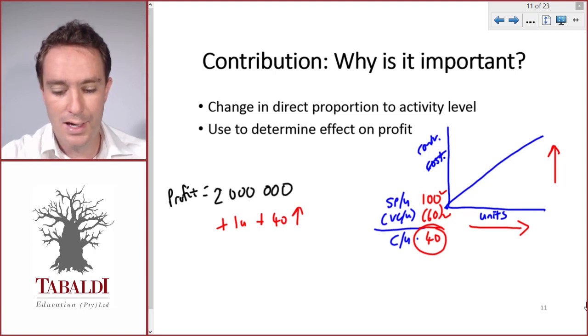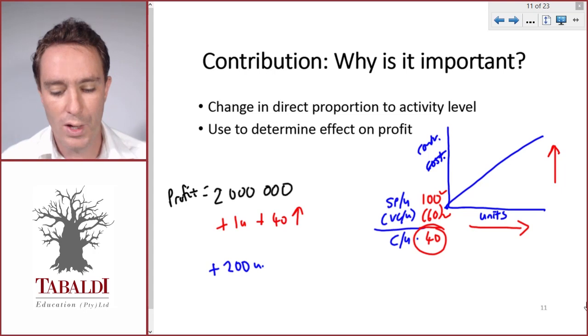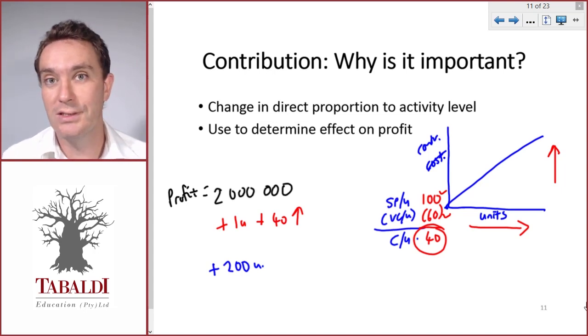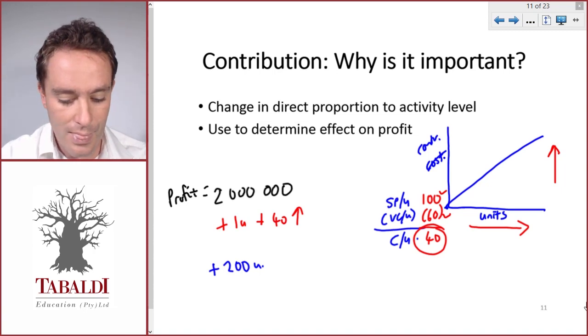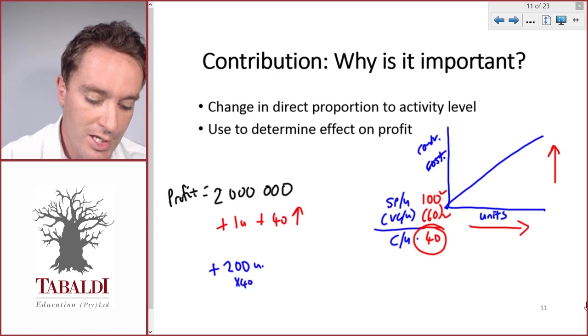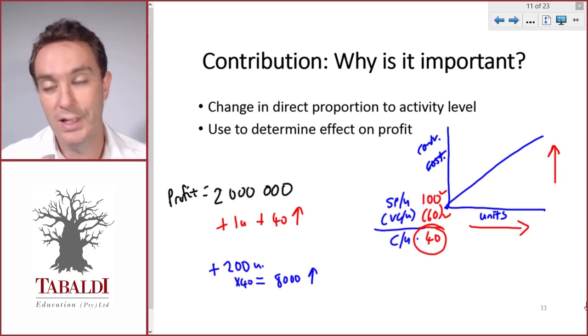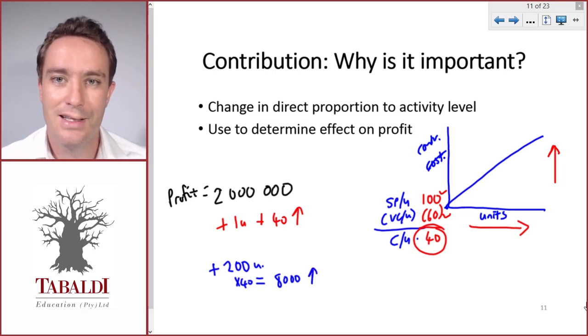Our fixed costs will stay the same regardless of what they are, and we will earn a contribution of 40 on each of the 200 units. Our total contribution will increase by 8,000, and that means our profit will increase by 8,000.